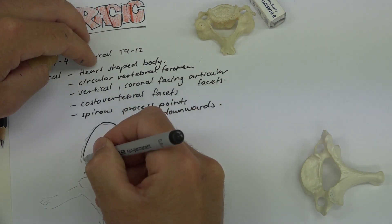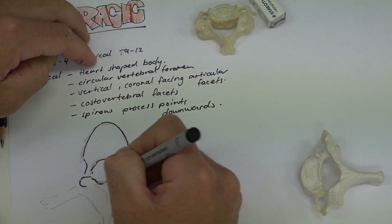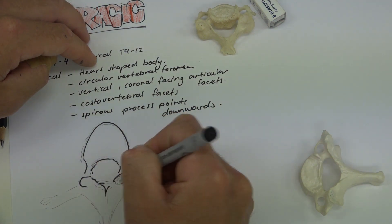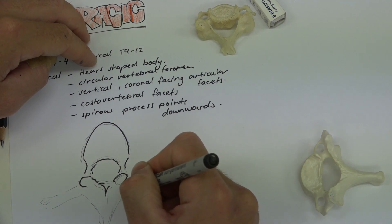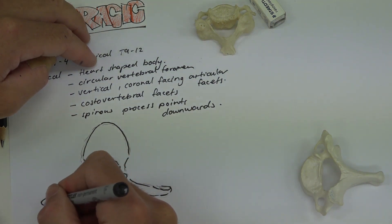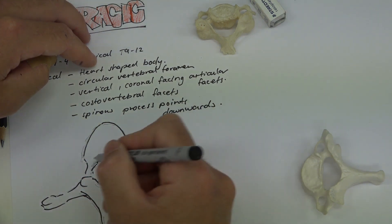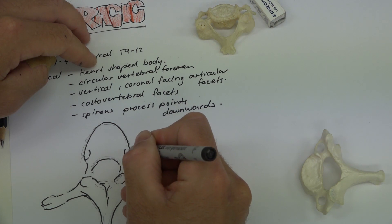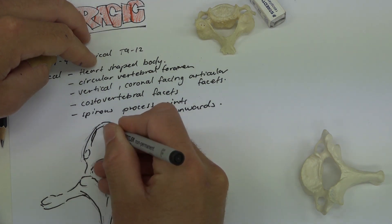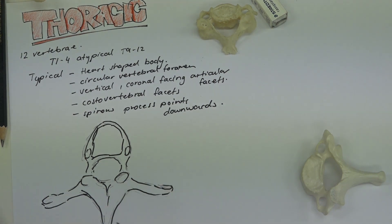Let's have a go at labeling a thoracic vertebra. You can either draw along as we have in the past or find a picture from Google — that's totally fine. Let's draw in all the features, remembering we talked about coloring in blue for articular sites and brown for the rest of the bone.